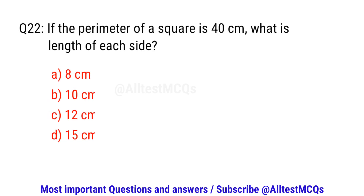Question number twenty-two. If the perimeter of a square is 40 cm, what is the length of each side? The right option is B. 10 cm.